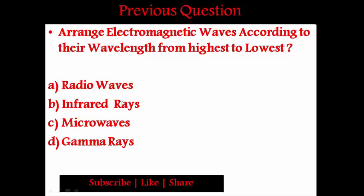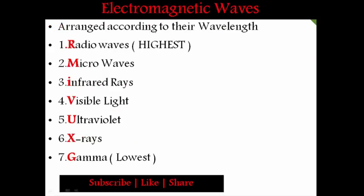If you don't know the answer, don't worry — I'm going to tell you a trick. Here you can see the different types of electromagnetic waves in the electromagnetic spectrum, arranged according to their wavelength from highest to lowest. The first is radio waves (highest wavelength), second is microwaves, third is infrared rays, fourth is visible light, fifth is ultraviolet rays, sixth is X-rays, and seventh is gamma rays, which has the lowest wavelength.